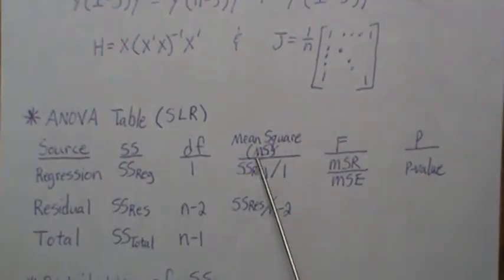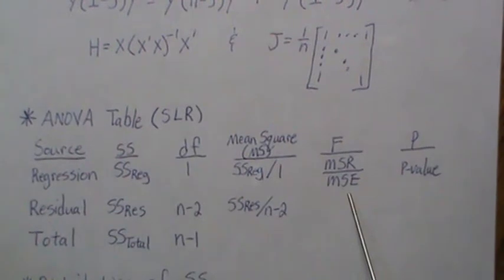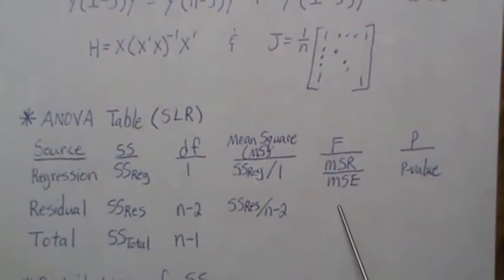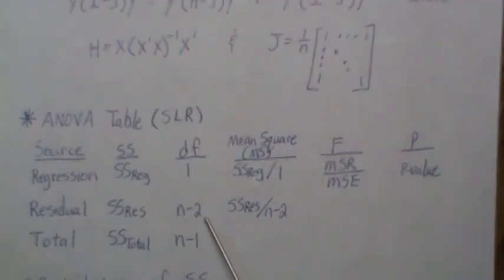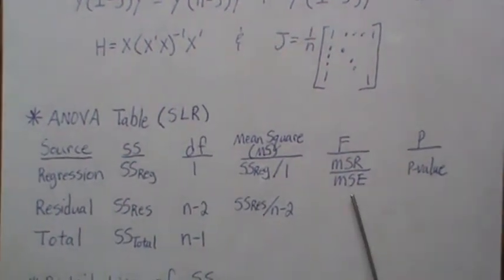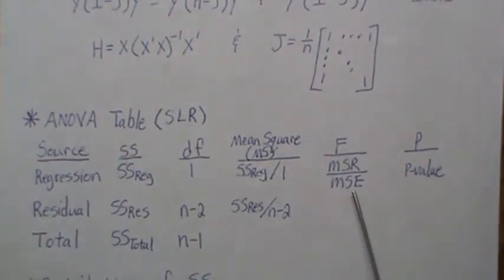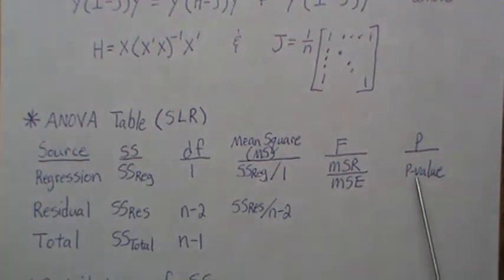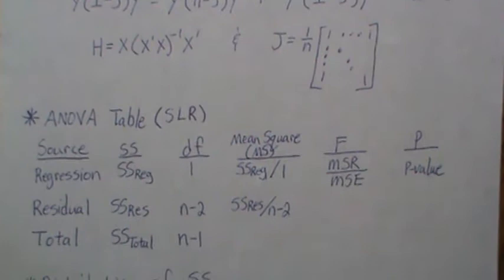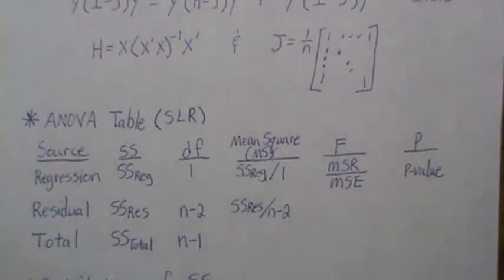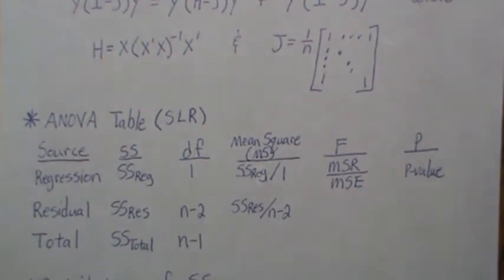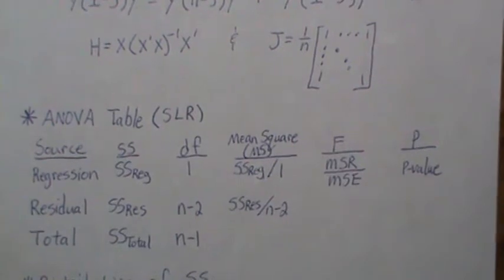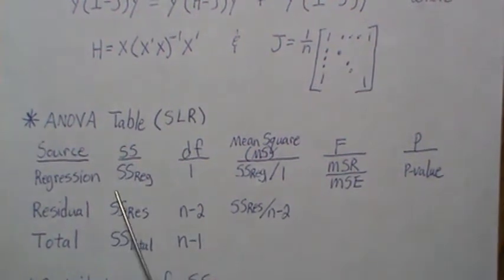This is MSR — mean square due to regression — and this is the mean square due to the residual, called the mean square error. If you take MSR divided by MSE you get an F test statistic with numerator and denominator degrees of freedom of 1 and n minus 2. That can be looked up in an F table or calculated in statistical software, and a p-value comes out that tells us something about the model.